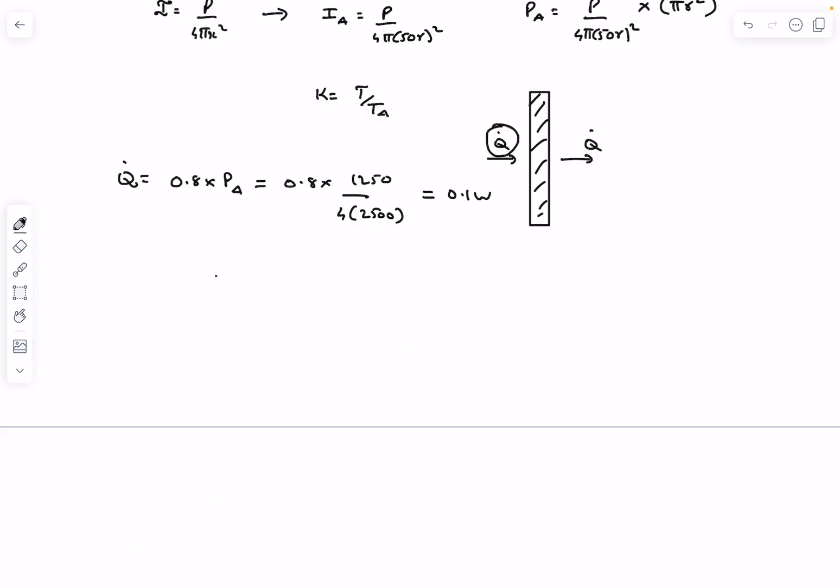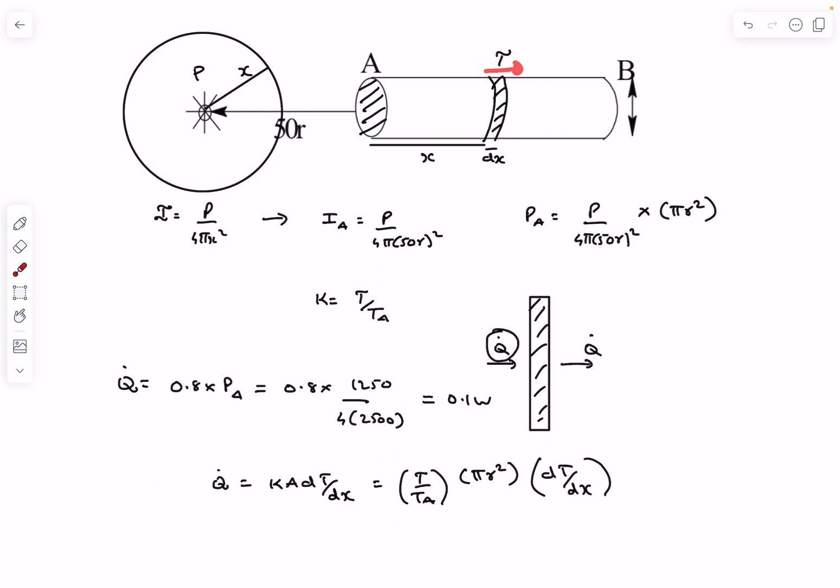So the incoming radiation Q dot on the cross section, I can now write it using Fourier's law of heat conduction. It is going to be Ka dT/dx and Ka in this problem was given to be T divided by Ta. The area of cross section is the area of cross section of the cylinder which is πR² times dT/dx. Now here we have to keep in mind one thing, dT/dx is negative.